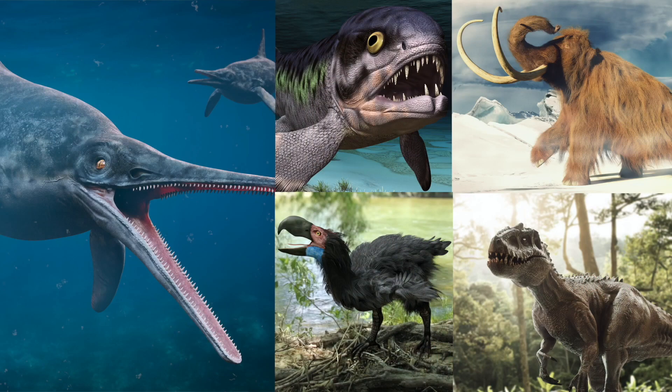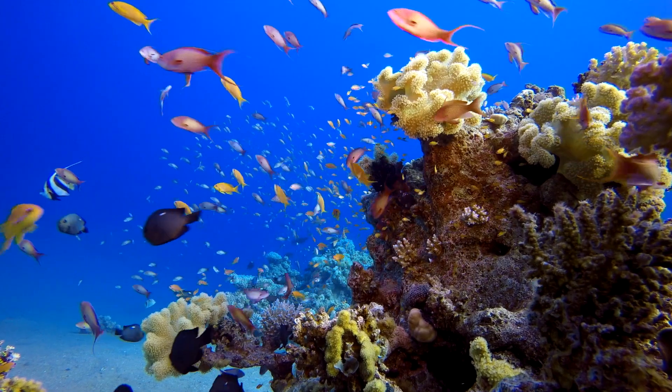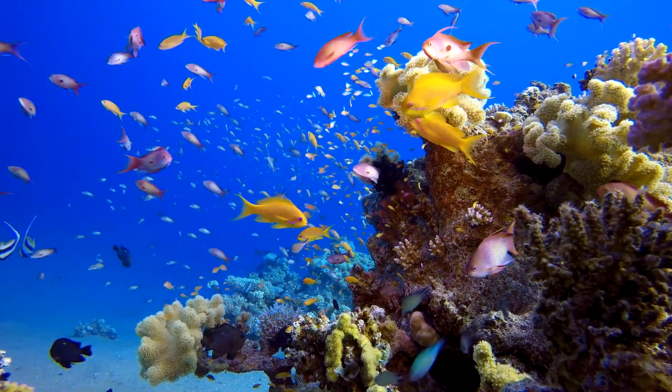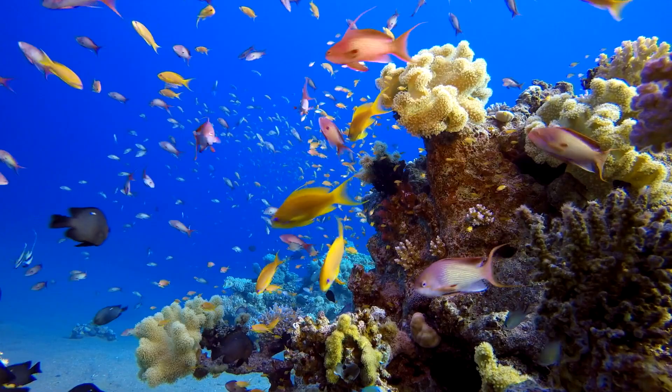Scientists estimate that nearly 99% of species that ever lived have already gone extinct. That means if we count the entire history of Earth, it's so much biodiversity that our minds can hardly comprehend it. But why so many different types of living things? Why aren't all living things the same?